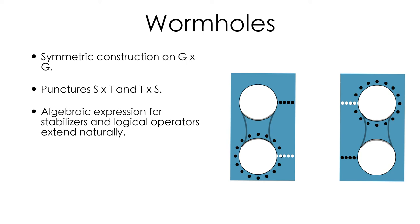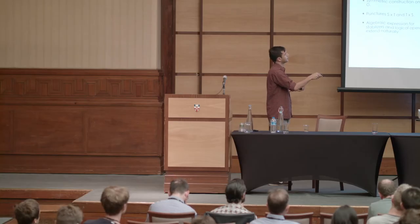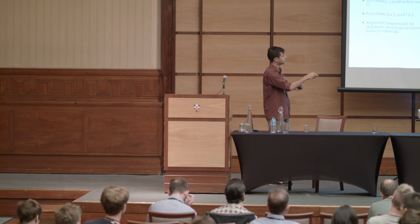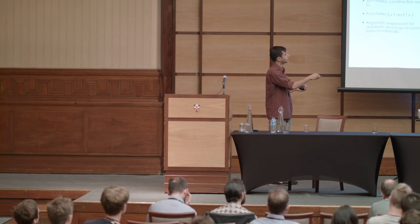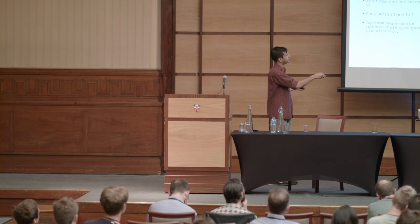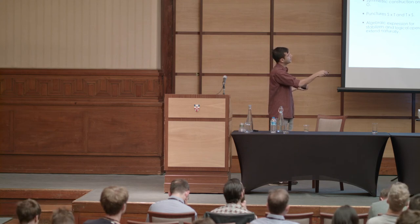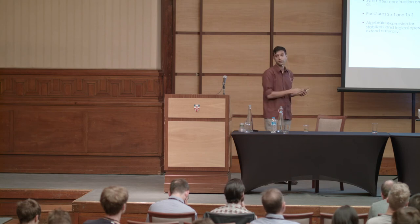What do the logical operators look like in the case of the surface code? Here's one way of encoding two qubits. One logical operator is a loop-type operator that encircles one of the punctures. Similarly, if you consider Z-type operators that encircle one mouth, you can consider X-type operators that encircle the other mouth — those two would be equivalent. The conjugate logical operator is a string of one Z-type and one X-type that terminates on both boundaries.